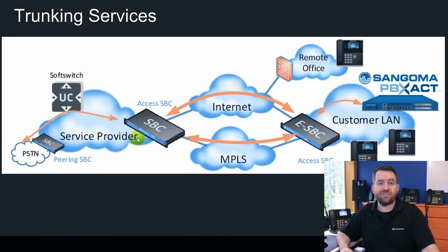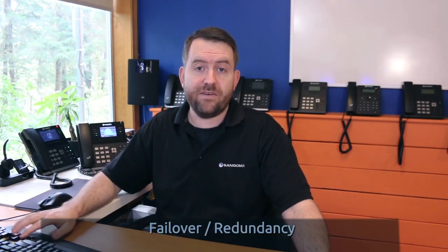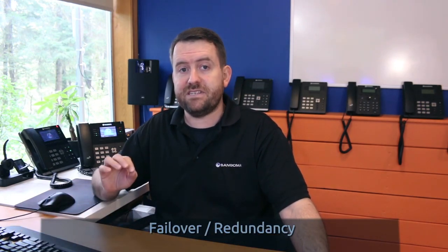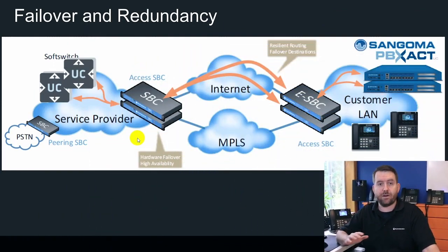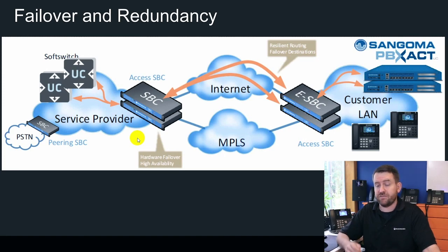Another useful feature for SIP trunking providers is the ability to do XML-based call detail recording for billing purposes, as well as RADIUS server integration for both call detail records and authentication. Now let's talk about failover, high availability, and redundancy. The Sangoma SBCs have the ability to not only do hardware failover in the event of an SBC failure, but they can also do failover routing in the event of an internet, SIP trunk, or PBX outage. In technology, services and equipment are bound to fail at some point, but by utilizing the high availability and failover features of the SBC, you can help prevent outages and lost revenue.